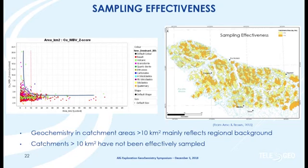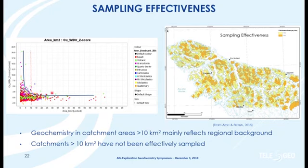If you plot your value against catchment area, you often see a decay — our highest values are typically in small catchments. You can decide at an arbitrary point which is the optimum catchment size to go above. In some ways it's like doing geostatistics on your data. In this case I've picked 10 square kilometers as the maximum size. Going back to the catchments and coloring in orange those areas with greater than 10 square kilometers, you can see there's still a lot of opportunity available in northern Vancouver Island.